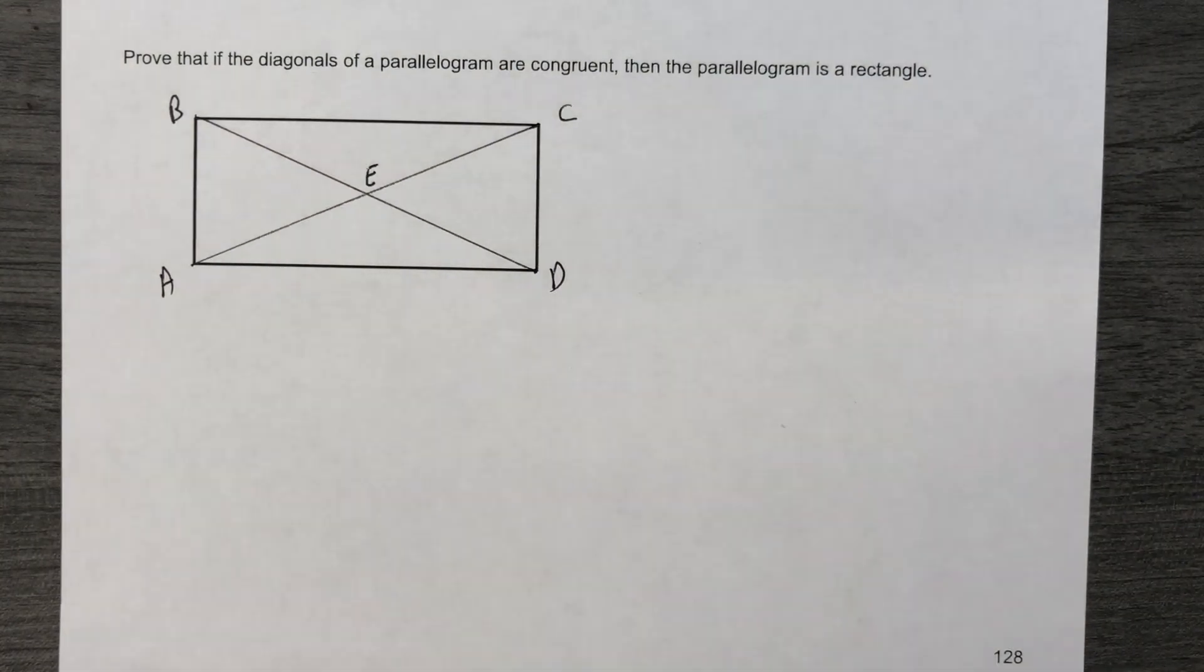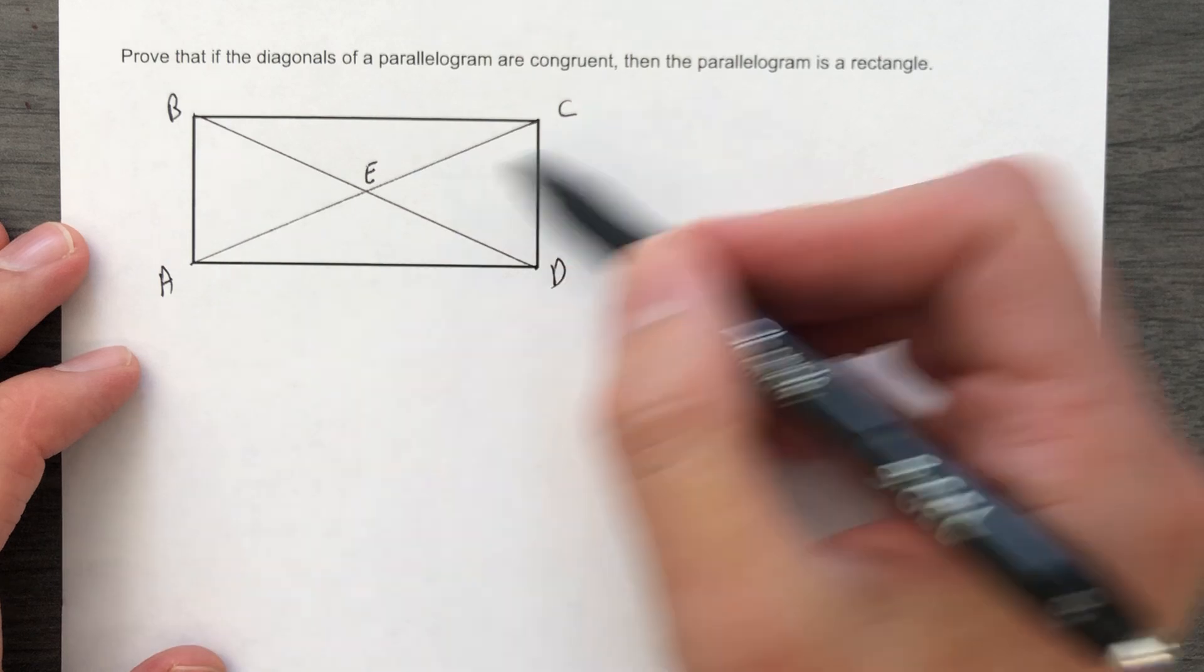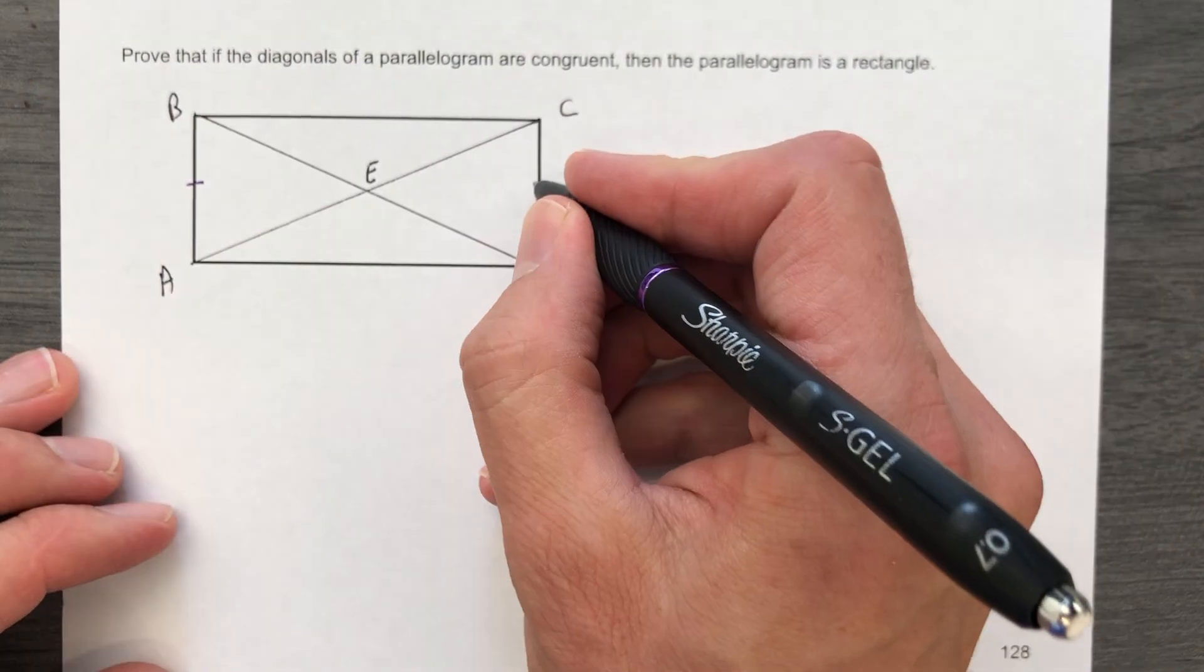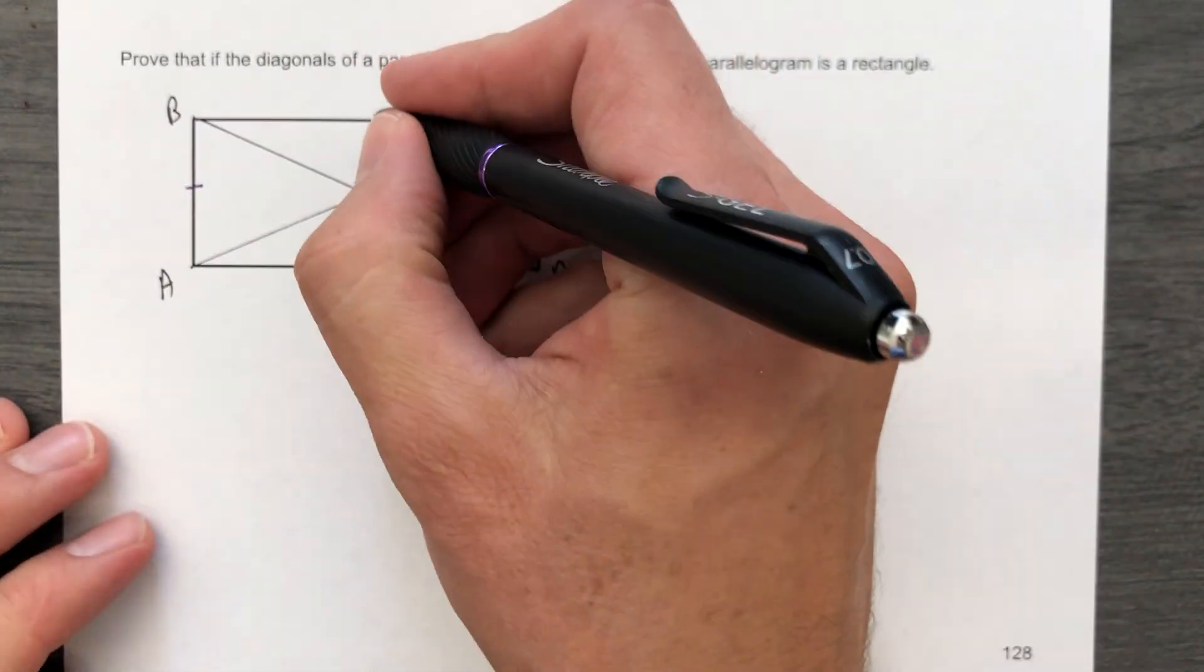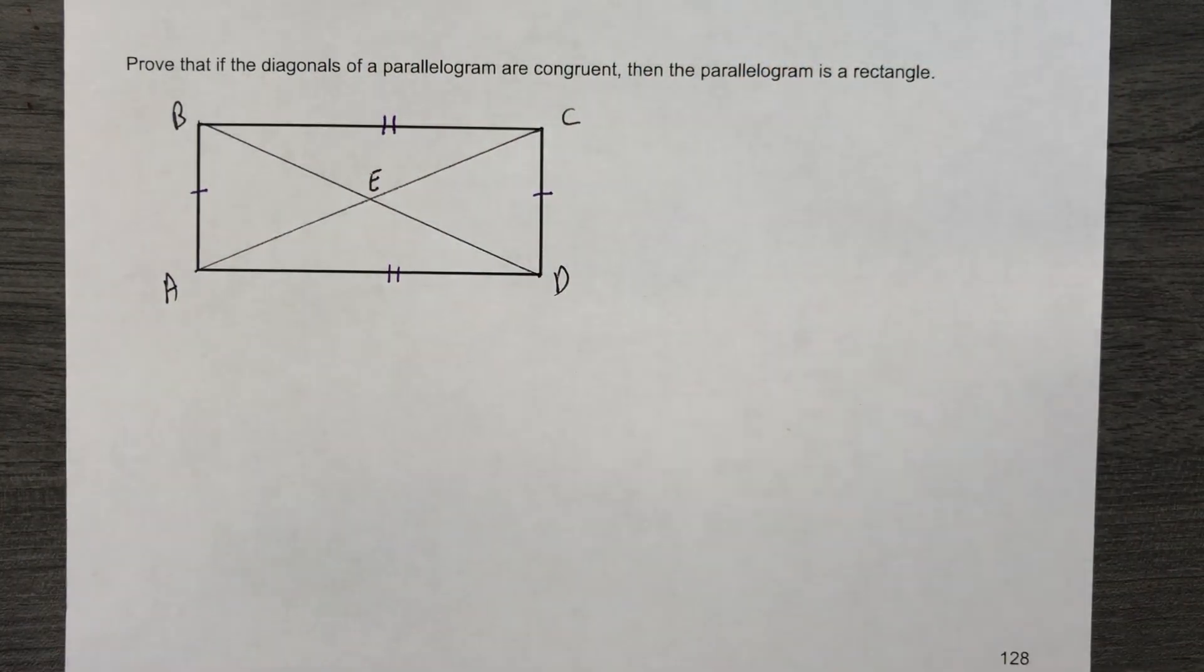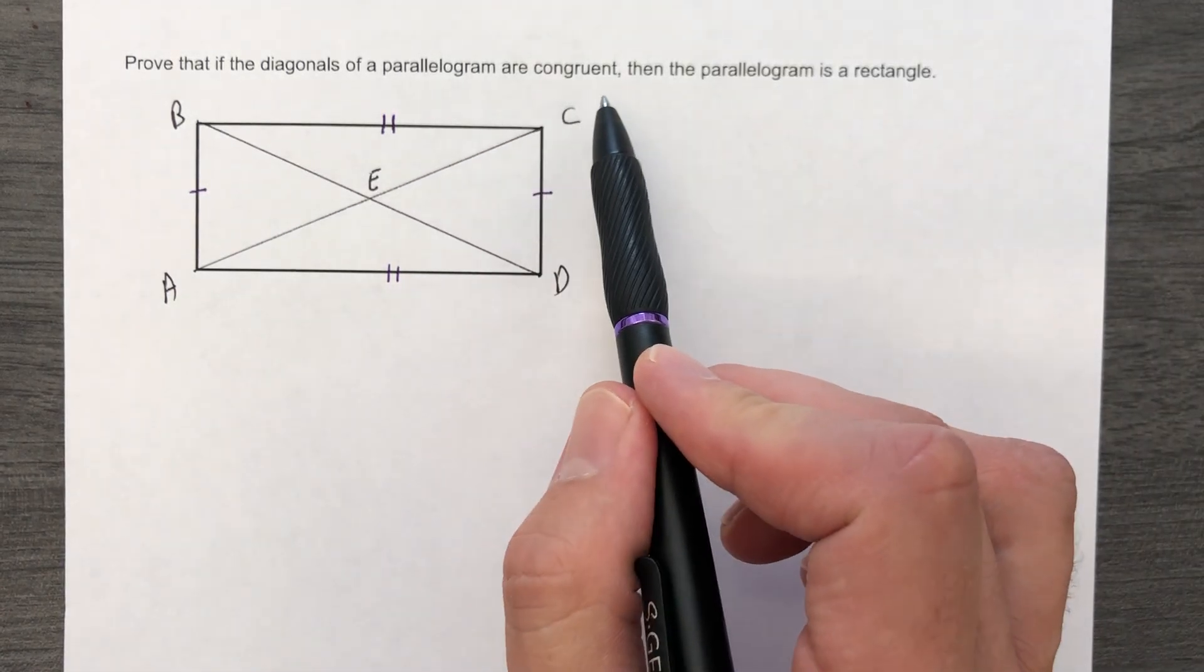They gave us a parallelogram, and they also told us that BD is congruent to AC. So there's some givens here, and those givens are gonna come in very handy. Because it's a parallelogram, I'm gonna go ahead and start labeling some stuff. We know that this side is equal to that side in measure, and this side is equal to that side in measure.